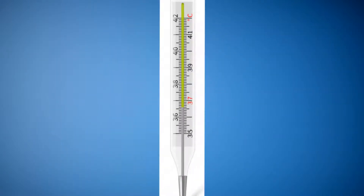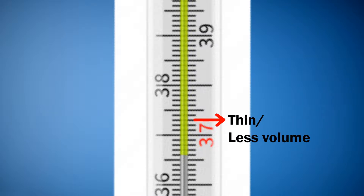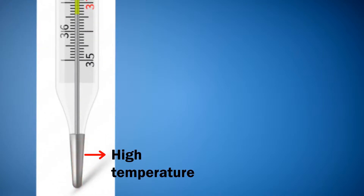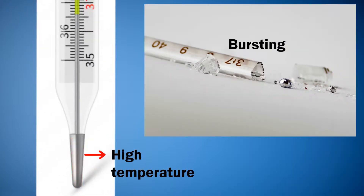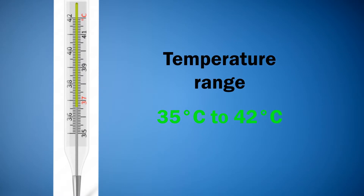Measurement of temperature not only depends on the inner liquid but also on tube material and size. To save resources, inner tubes containing liquid are made very thin and of less volume. At high temperatures, there is always a possibility of bursting of the tube because of high expansion of liquid. One should always keep in mind the allowed temperature range of a thermometer before using it.